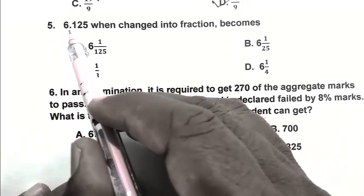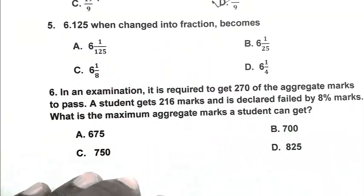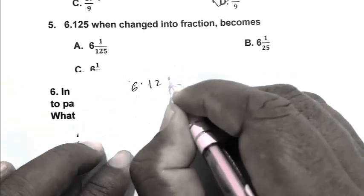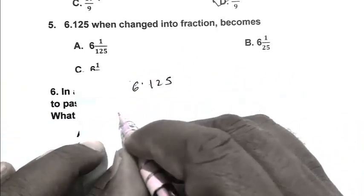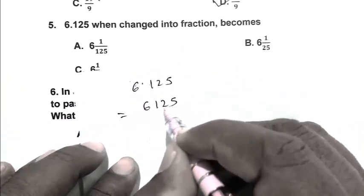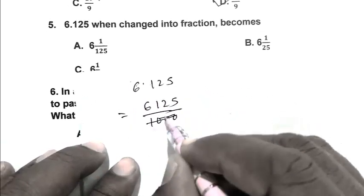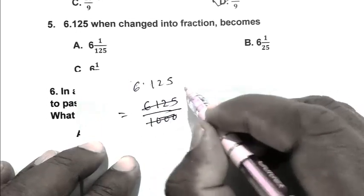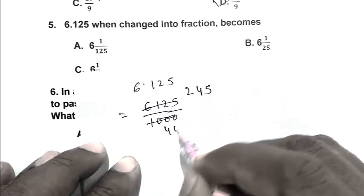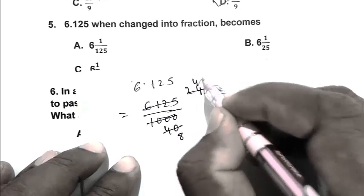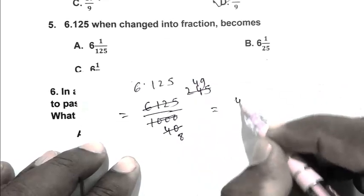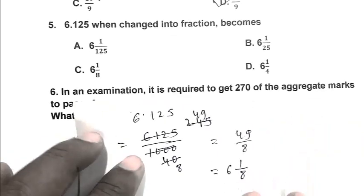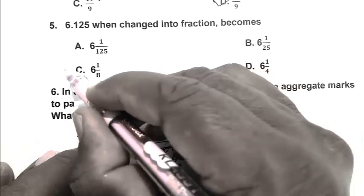Question number 5. 6.125 when changed into fraction becomes. So friend, the number is 6.125. Eliminating point, we get 6,125 upon 1000. So dividing by 25, we get 245 upon 40. Again dividing by 8, we get 49 upon 8. That is 6 and 1/8. So C is the right answer.